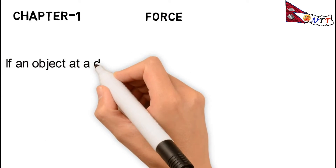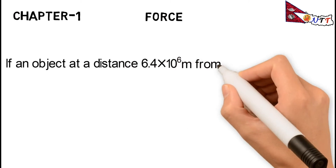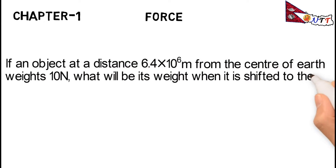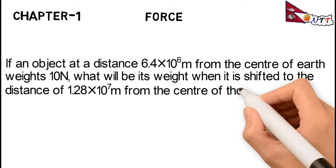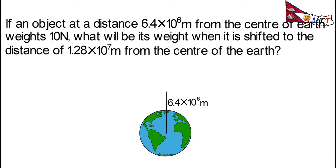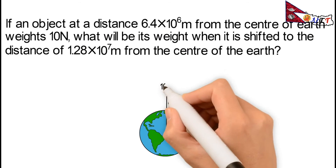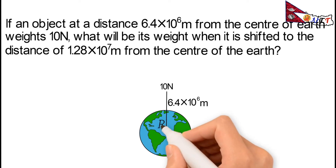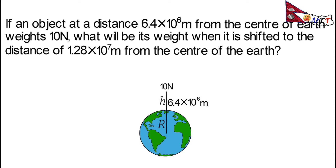Problem: If an object at a distance of 6.4 × 10⁶ m from the center of the Earth weighs 10 N, what will be its weight when it is shifted to a distance of 1.28 × 10⁷ m from the center of the Earth?